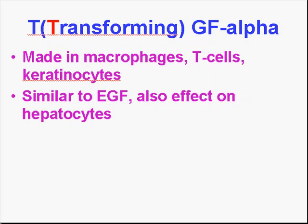Transforming growth factor: there's an alpha and there's a beta, and they're not really too well related to each other. The primary one, transforming growth factor alpha, is made by macrophages and T cells and keratinocytes. And what does it do? It does pretty much what EGF does, and it also has an effect on hepatocytes as well.